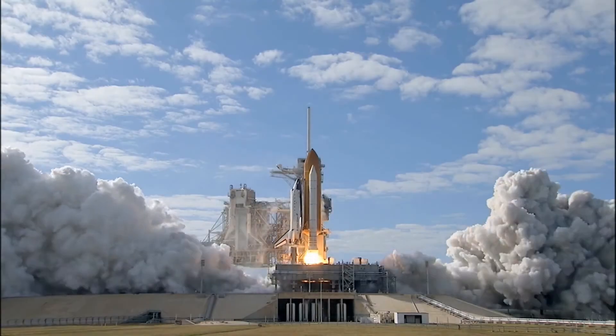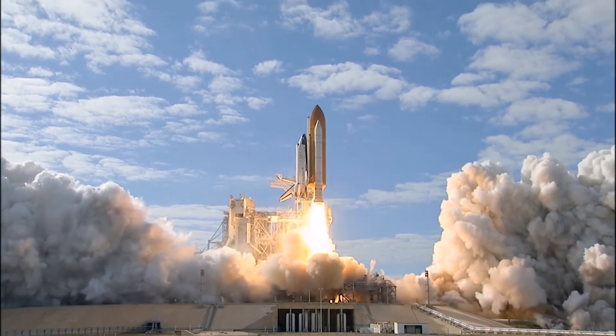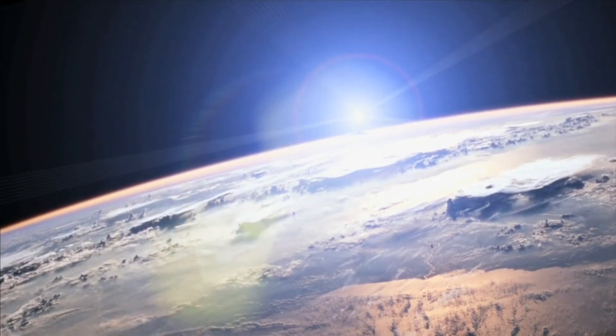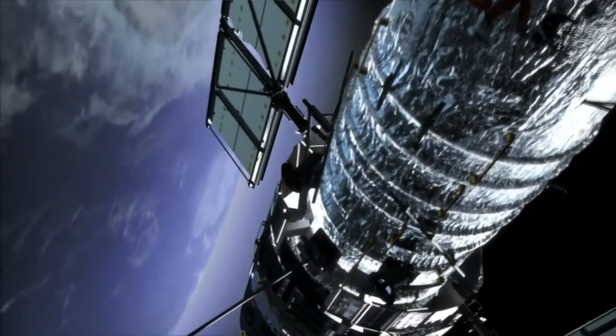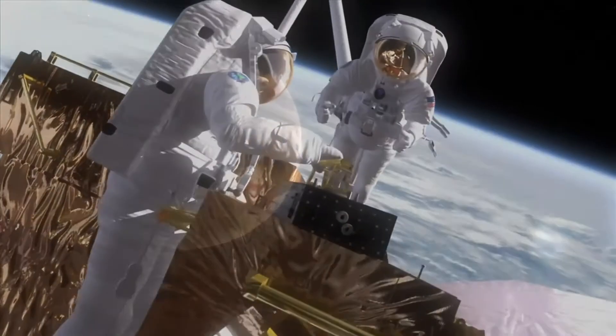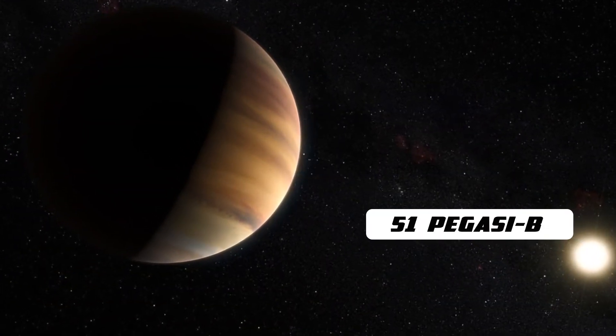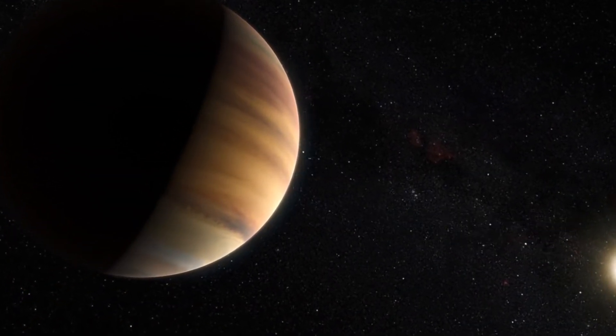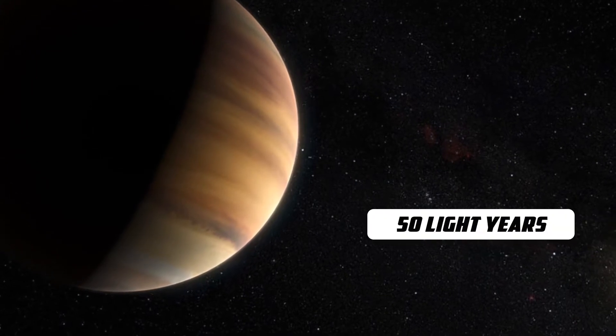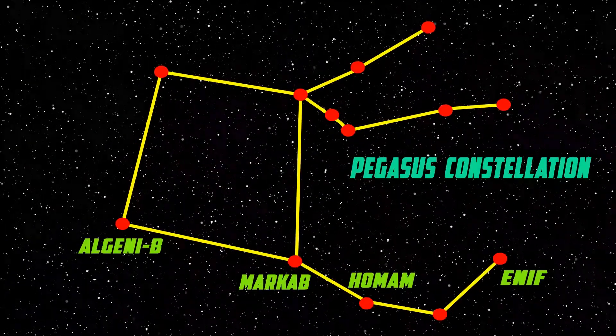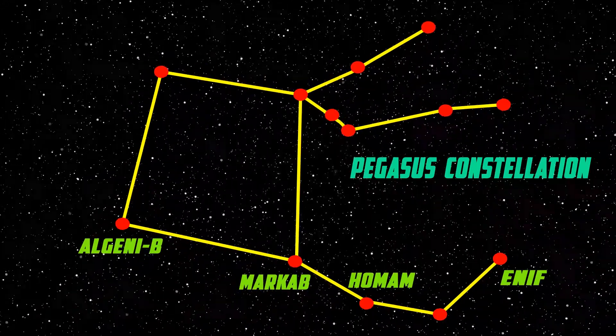After the successful launch of Hubble Space Telescope, the search for exoplanets has become a daily job, especially the search for Earth-like planets. 51 Pegasi b was the first discovered exoplanet, located at a distance of 50 light years from Earth in the constellation of Pegasus, orbiting a Sun-like star named 51 Pegasi.